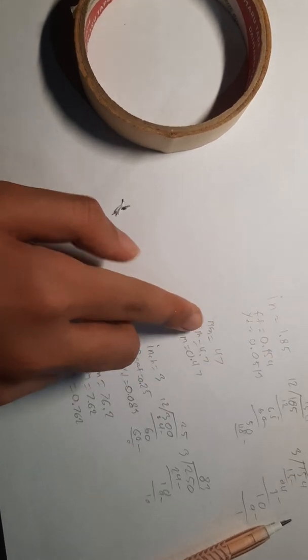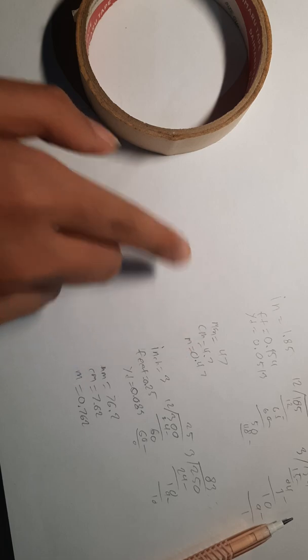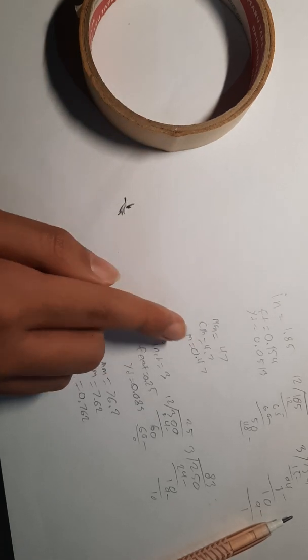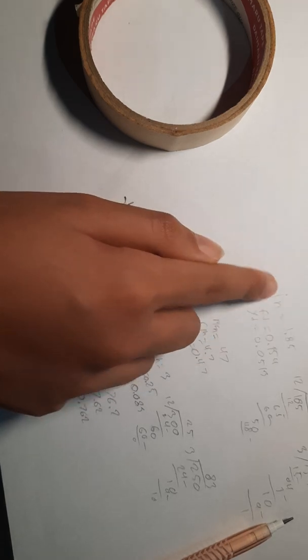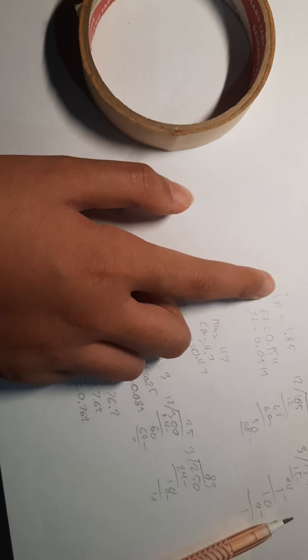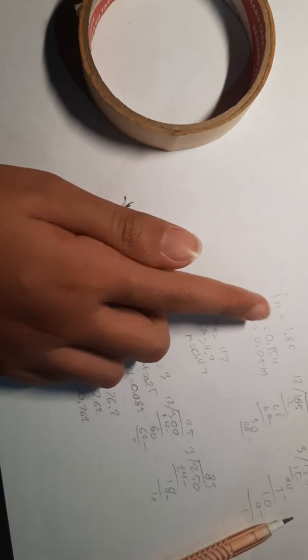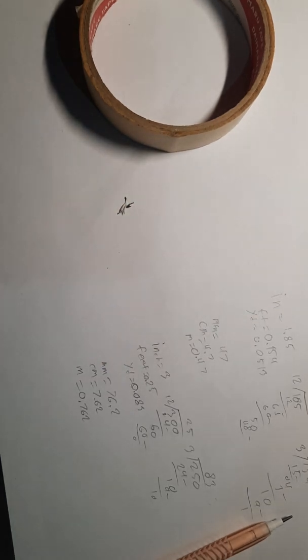For millimeters to centimeters you just divide by 10, and vice versa you just need to times it. Centimeters to meters you need to divide by 100 and vice versa. For inches to feet is 12, times 12 or divided by 12. Feet to yard is divided by 3 or times by 3. Okay, so we're done.